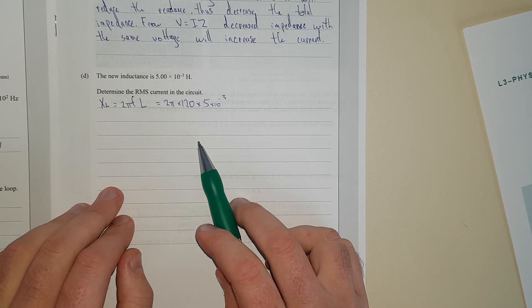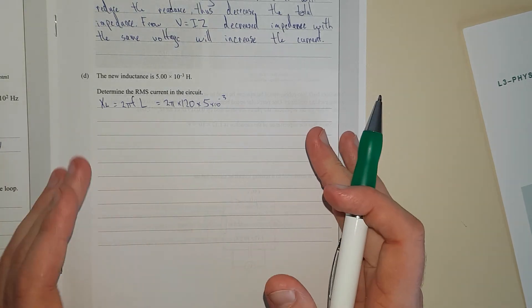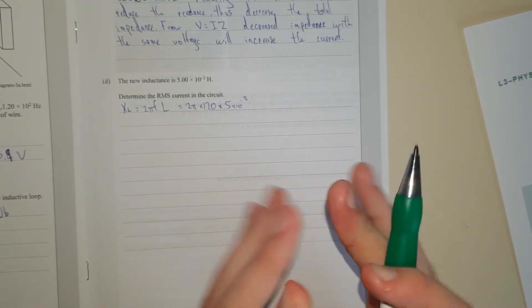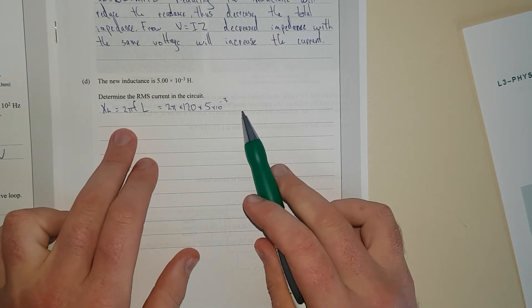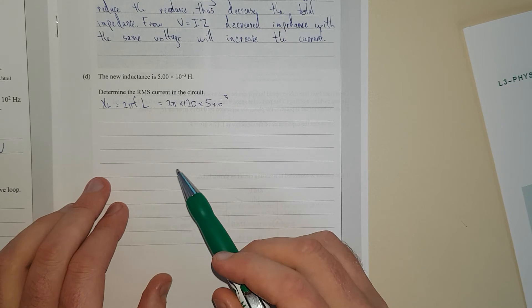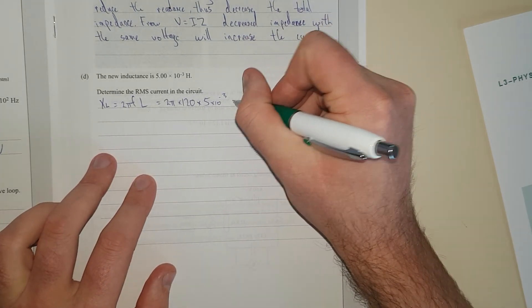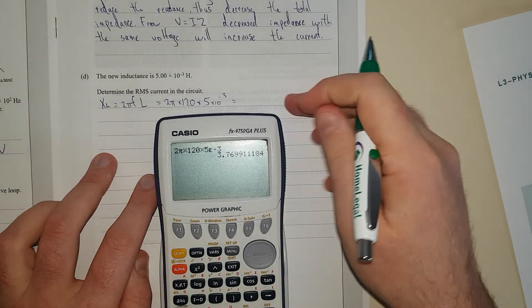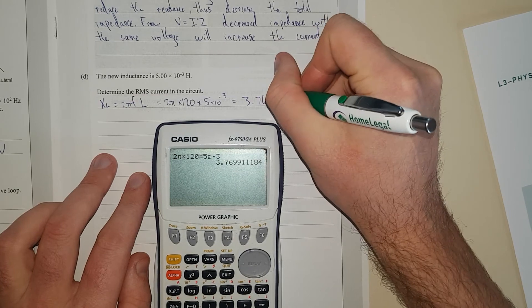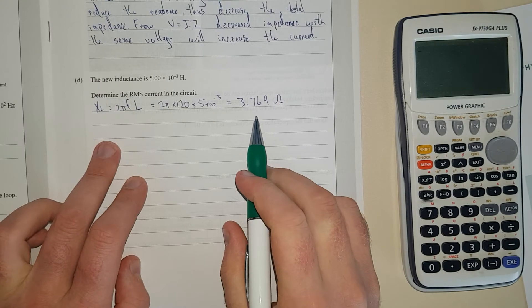We're going to find the total impedance, and then from there we'll divide by the voltage and that'll give us the current. Total impedance is all the fancy resistances added together: regular resistance and reactance, which comes with capacitors and inductors. This should equal 3.7699 ohms.